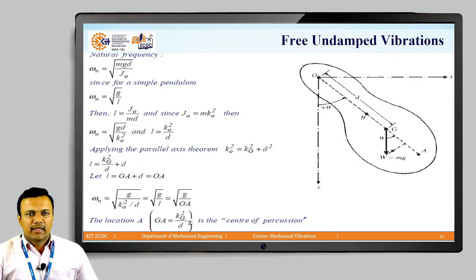We can calculate the natural frequency of the compound pendulum as under root of mg d by J0. If we compare the same frequency with the simple pendulum frequency which is given as under root of g by l, we can write down l as J0 by m d, and J0 is nothing but your mass moment of inertia. It can be written as m into k0 square where k0 is the radius of gyration. So omega n can be rewritten as under root of g d by k0 square and your l can be written as k0 square divided by d.